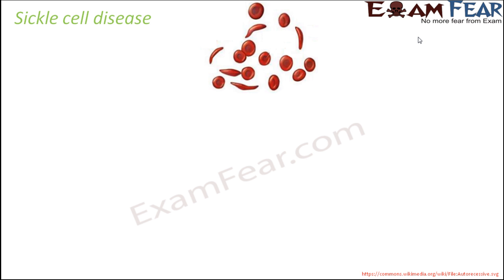Let us talk about the sickle cell disease and understand why it is an example of pleiotropy. Sickle cell disease occurs due to the presence of structurally abnormal hemoglobin. If you look at this image, normally the shape of the RBCs — the red blood cells — is round. But when somebody is suffering from this disease, many of the RBCs become sickle shaped.